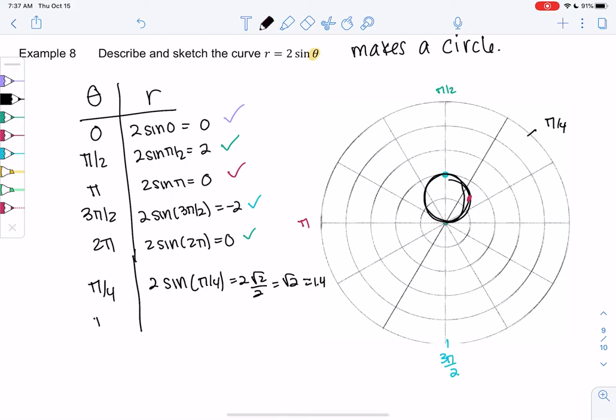Should we check π/3 just because we want to be sure? 2 sin(π/3) would be 2√3/2 or √3, which is about 1.7. So π/3 is right here, 1.7. Yeah, it makes sense.